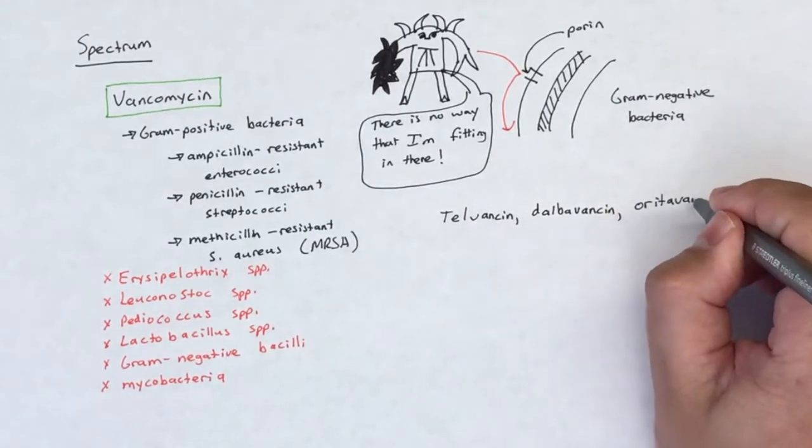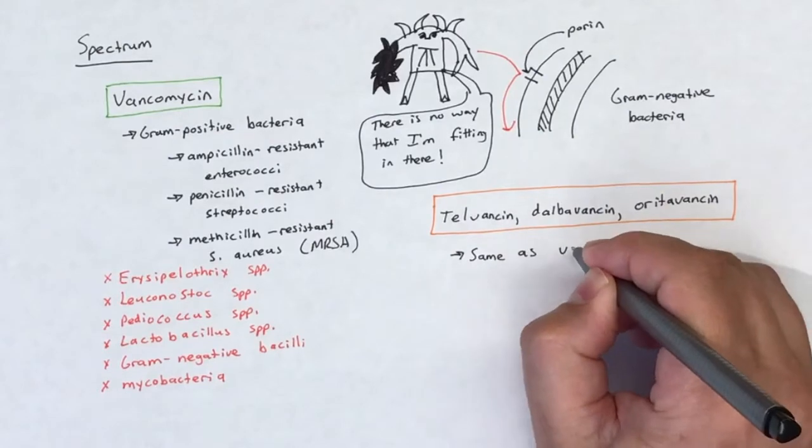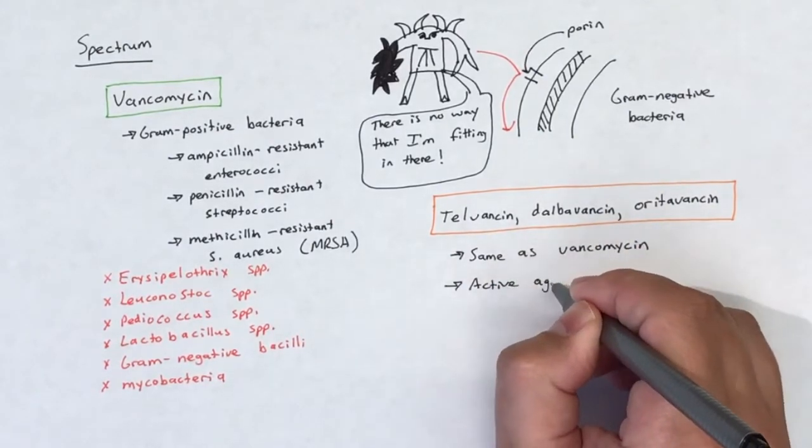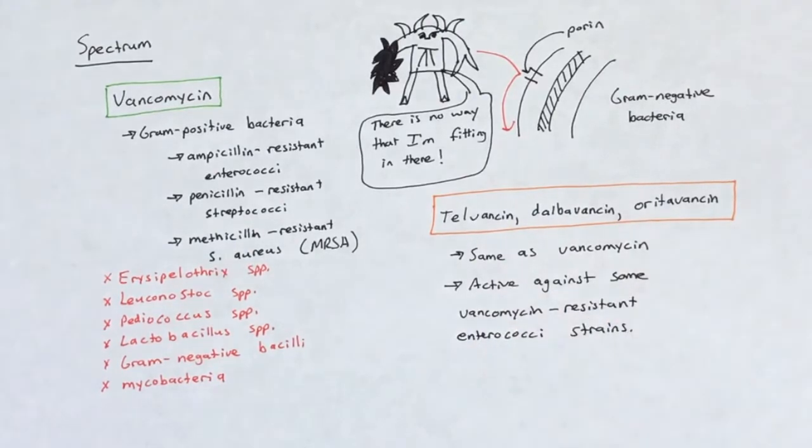The activity of lipoglycopeptides—i.e., telavancin, dalbavancin, and oritavancin—is essentially the same as the activity of the glycopeptide vancomycin. The difference is that lipoglycopeptides are active against some enterococci strains that have developed resistance to vancomycin.